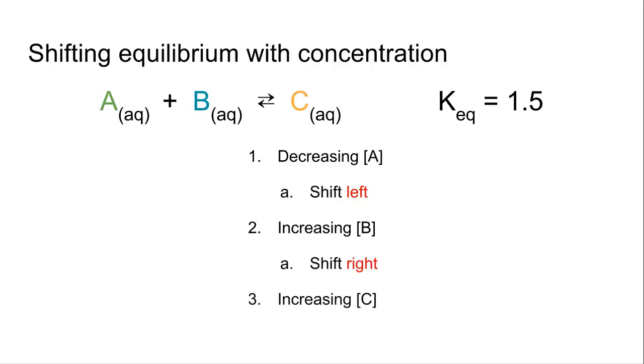And then the third situation, what if we increase C? Well, now we've got too much C. So guess what? We're going to try to get rid of that C, which means we're going to use the reverse reaction to get rid of C, which means we call that a shift to the left. It's going to make the left arrow be the right way.